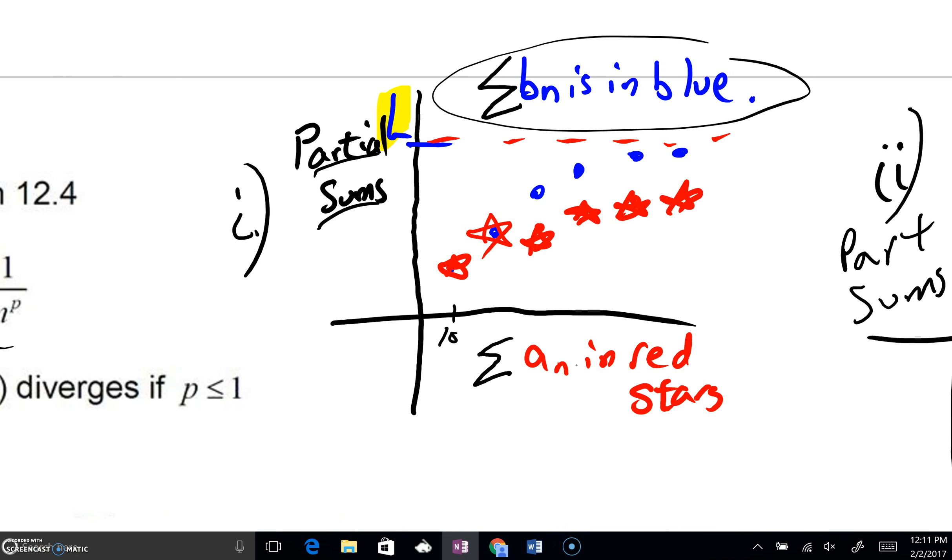We're guaranteed that those red stars have to be lower than those blue dots. But if the blue dots level out, there's no way that the red stars can shoot off towards infinity. If term by term in A sub n we must be smaller, that will guarantee that this series in red stars must level off as well. We don't know what it will converge to, but we're guaranteed it must converge also.